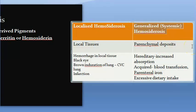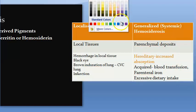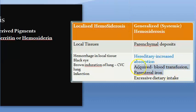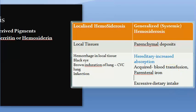In generalized hemosiderosis, there is iron deposition throughout the whole body. This can happen hereditarily — the person is absorbing a lot of iron. In acquired conditions, it can occur because of blood transfusions, such as in thalassemia patients who receive so many transfusions that the iron load increases. It can also be due to parenteral iron therapy in excess.